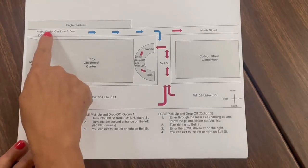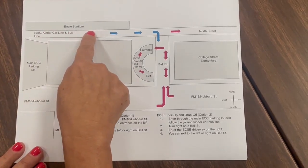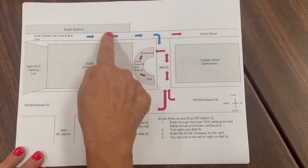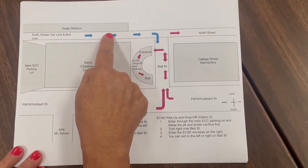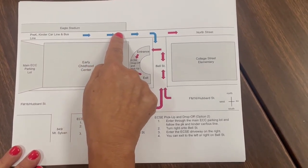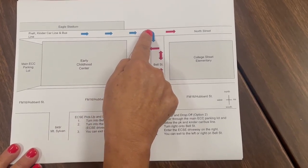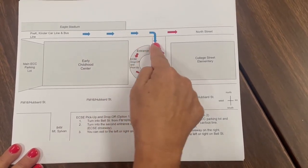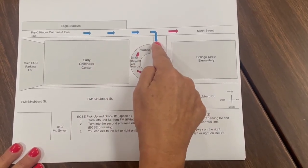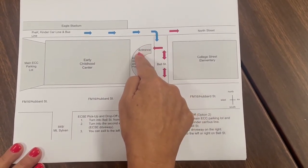Option 2. From Highway 16, you can enter through the main Pre-K and Kinder drop-off line. Once you get to Bell Street, turn right onto Bell Street and enter the ECSE drop-off line.